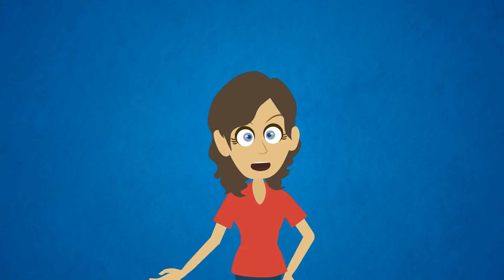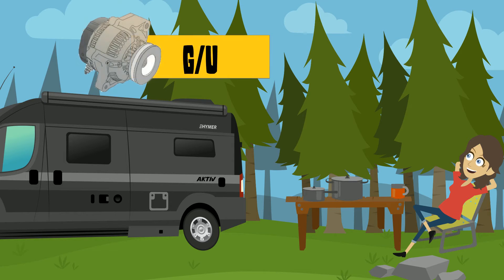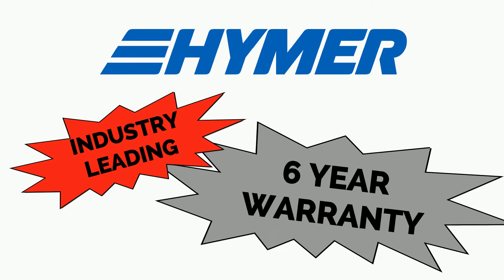On a final note, Hymer is working towards the simplification of the RV. The GU is a new technology and proof of Hymer's ongoing commitment to improving and simplifying the use of our RVs. And let's not forget that the GU is warrantied for up to six years.